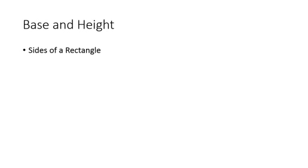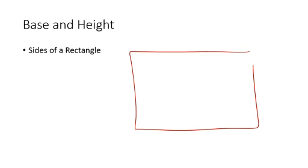To find the area of a rectangle, what we need is the base and the height. So the sides of a rectangle, if I just have a normal rectangle like this, one of the sides is called the base, which is usually the one going horizontal, and then one is called the height, which is the one going vertically.